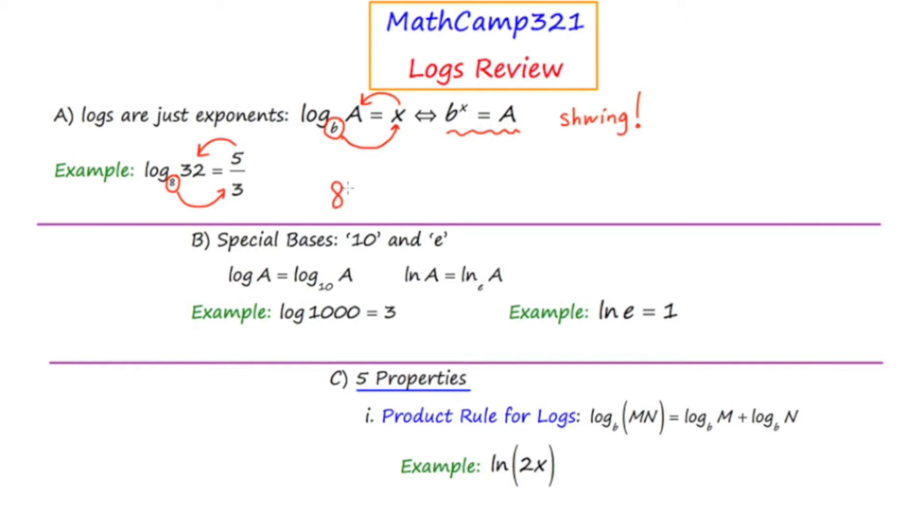So let's see if that in fact is the case. 8 to the 5 thirds power is equal to 32. Let's see if that's true or not. Well, the cube root of 8 is 2, and 2 to the fifth is 32. So this is in fact correct. So this logarithmic equation that I wrote is actually valid.